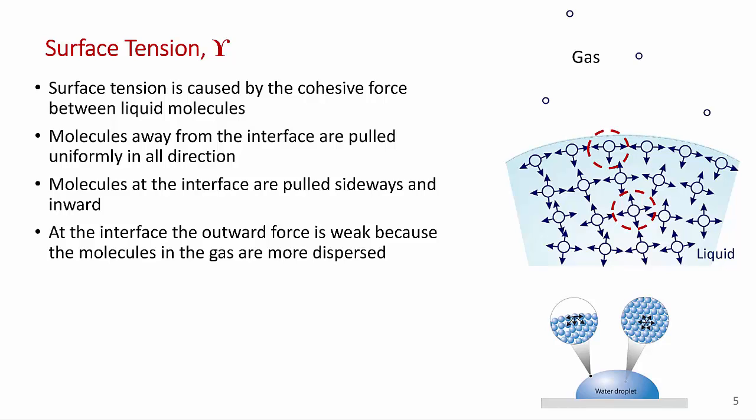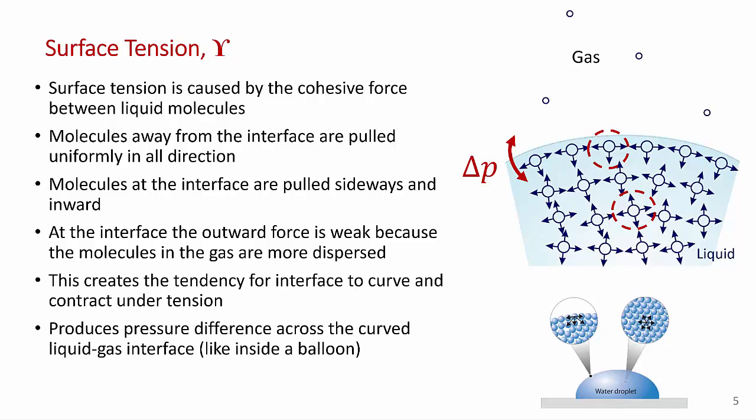So this force balance on the surface molecules creates a tendency for the gas-liquid interface to curve and contract under tension. And you've seen that droplets of water want to form spheres. Surface tension also produces a pressure difference across the curved gas-liquid interface, much like the skin of a rubber balloon makes the pressure inside the balloon higher than on the outside. And we'll do a calculation of what's called capillary pressure, the pressure difference across that interface, later in this video.